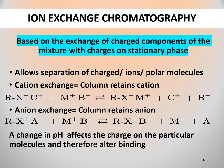Ion exchange chromatography is based on the exchange of charged components of the mixture with the charges on the stationary phase. It allows separation of charged or polar molecules. The stationary phase consists of an immobile matrix that contains charged ionizable functional groups or ligands, and this stationary phase contains ion exchangers. On the basis of ion exchangers, this chromatography is of two types: cation exchange chromatography and anion exchange chromatography.